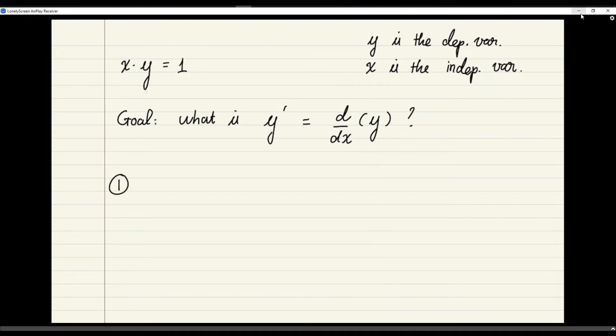Well, let's look at the first method that we can use to solve this problem. It is not hard to see that we can rewrite y explicitly in terms of x as y equals 1 over x. And using the quotient rule or power rule, it is not hard to see that y prime is negative 1 over x squared in this case.